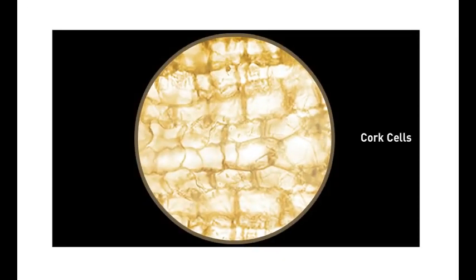To Hooke, the very thin slice of cork under the microscope appeared to be made up of little empty boxes, which he named cells.